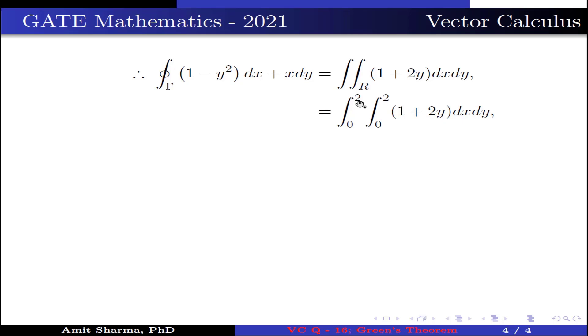Now integrate with respect to y, we get integration from 0 to 2, y plus 2 times y²/2. Why is it so? Because the integration of 1 is y and integration of y is y²/2.